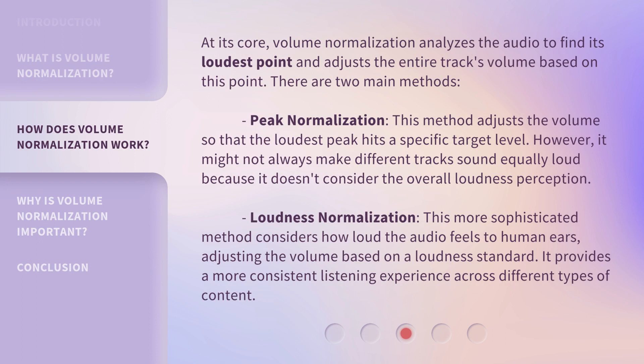At its core, volume normalization analyzes the audio to find its loudest point and adjusts the entire track's volume based on this point. There are two main methods. Peak normalization: this method adjusts the volume so that the loudest peak hits a specific target level. However, it might not always make different tracks sound equally loud because it doesn't consider the overall loudness perception. Loudness normalization: this more sophisticated method considers how loud the audio feels to human ears, adjusting the volume based on a loudness standard, providing a more consistent listening experience across different types of content.